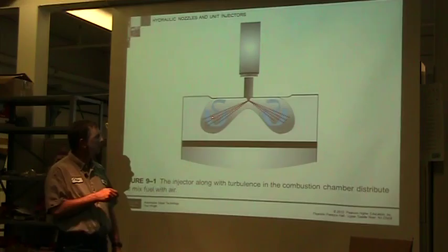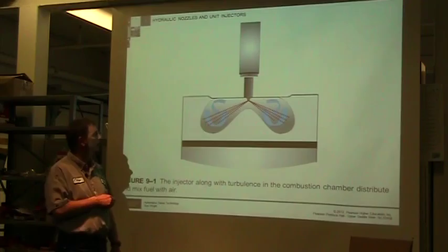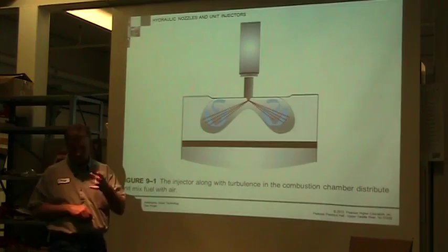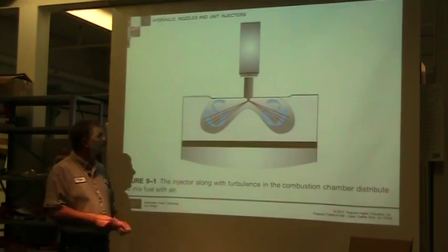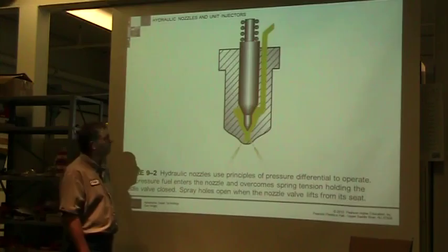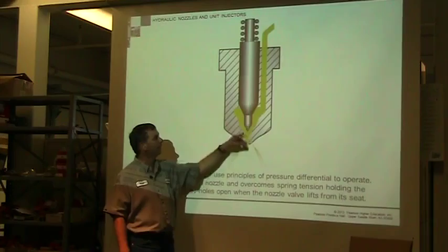Here's a nozzle shooting into the top of a direct injection engine — it's got to do a lot of things. It has to atomize the fuel, produce a pattern that sprays correctly into the cavity in the piston, and it has to do it at the right time. So it's got to do a lot of stuff in a short period of time and create enough turbulence to swirl and break that fuel apart.